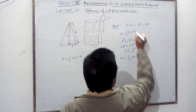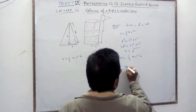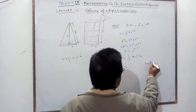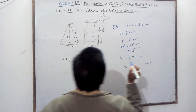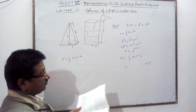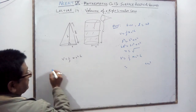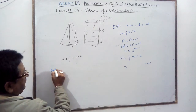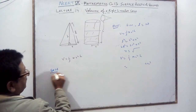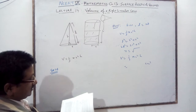Calculate r from that equation. Once you have r, the volume is (1/3)πr²h. h is given, so substitute all values and you will get the answer in cubic centimeters. Example 15 is over. Now example 16.